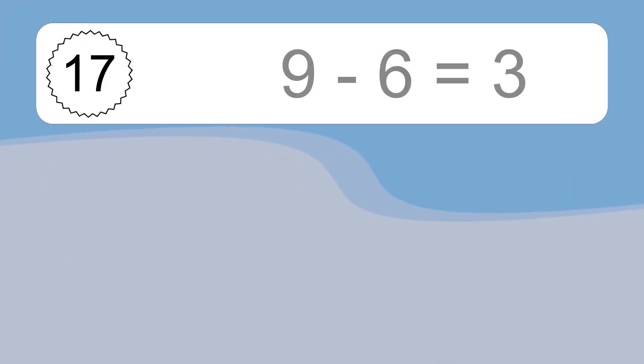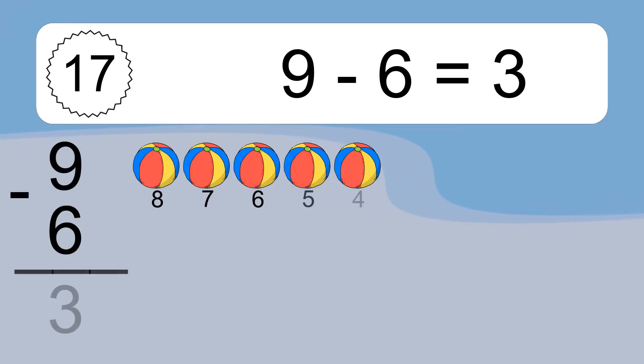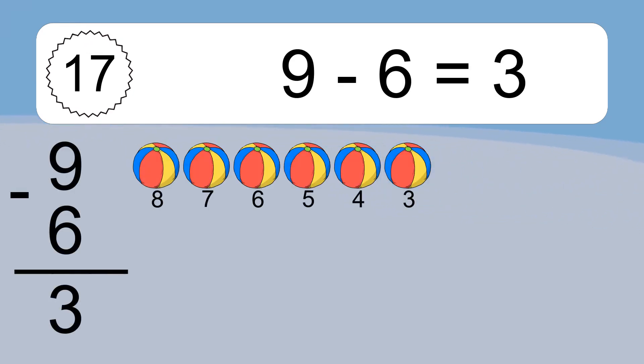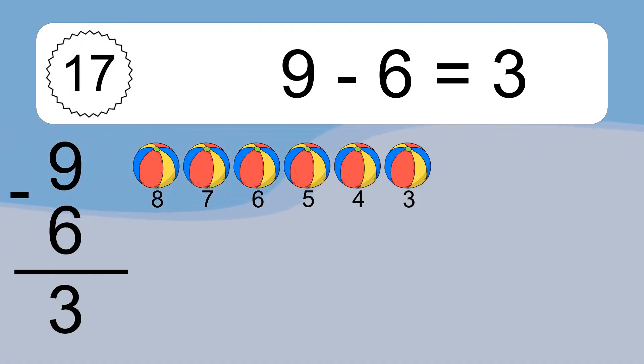9 minus 6 equals 3. Let's count it: 8, 7, 6, 5, 4, 3.